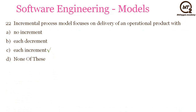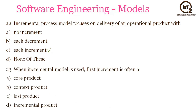The next question is: when incremental model is used, the first increment is often — core product, context product, last product, or incremental product? As soon as we make our first increment, all the basic or core functionality will be covered, then it will be tested and other increments will be released. So the answer will be A — core product.